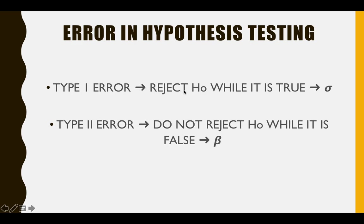For Type 1 error, we reject H0 while it is actually true — we are not supposed to reject H0 because H0 is the correct hypothesis. When this occurs, we call it Type 1 error, denoted as sigma (α). Type 2 error, denoted as beta (β), means we do not reject H0 while it is false — meaning we are supposed to reject H0, but we fail to reject it. If this happens, we are committing Type 2 error.